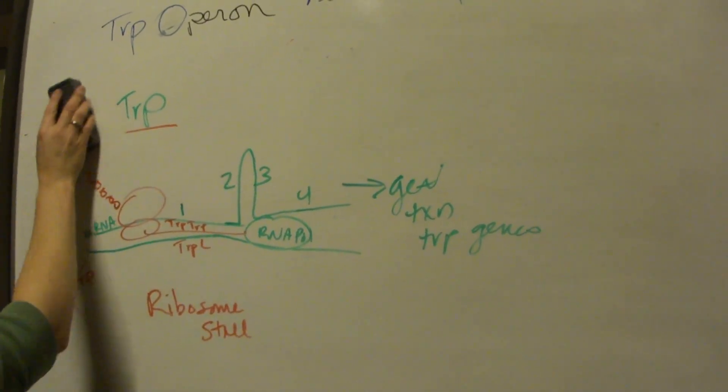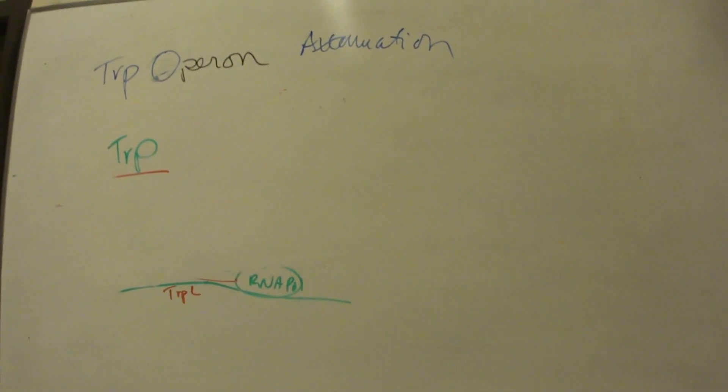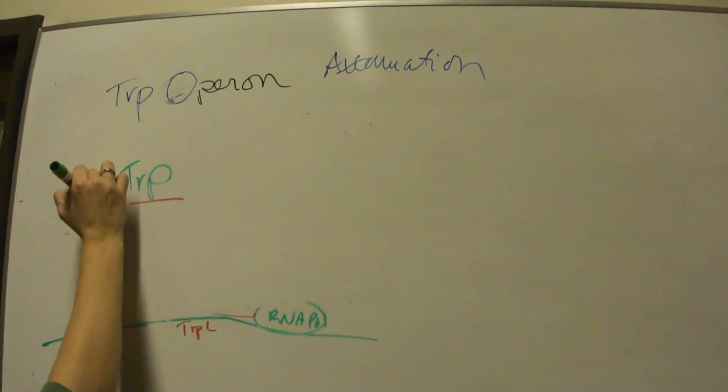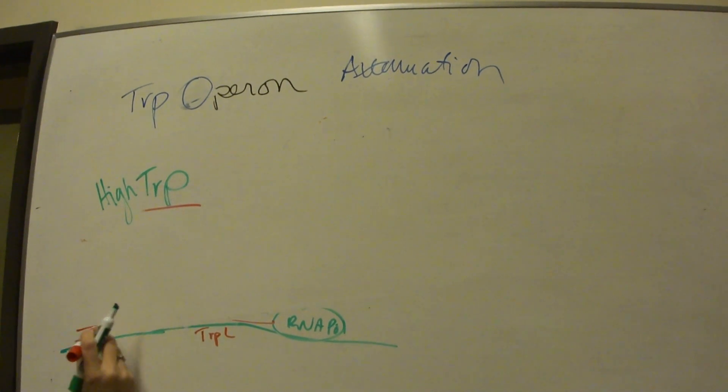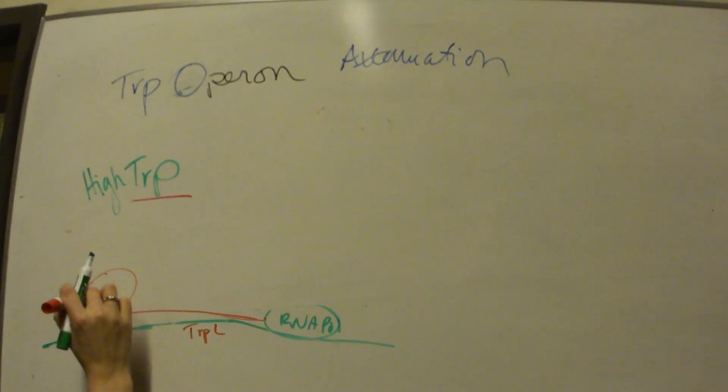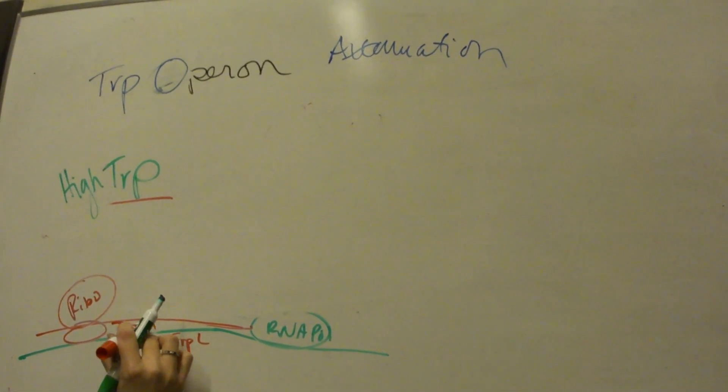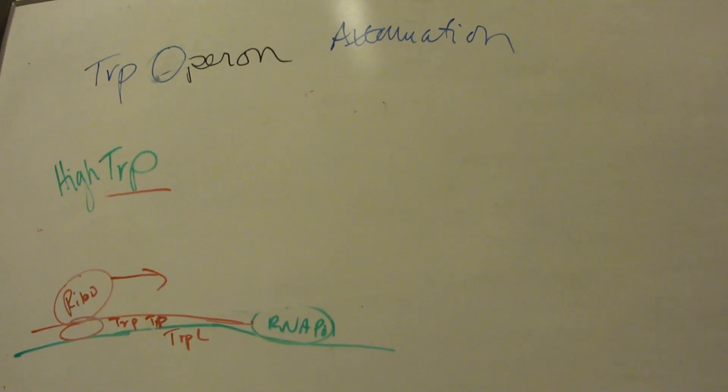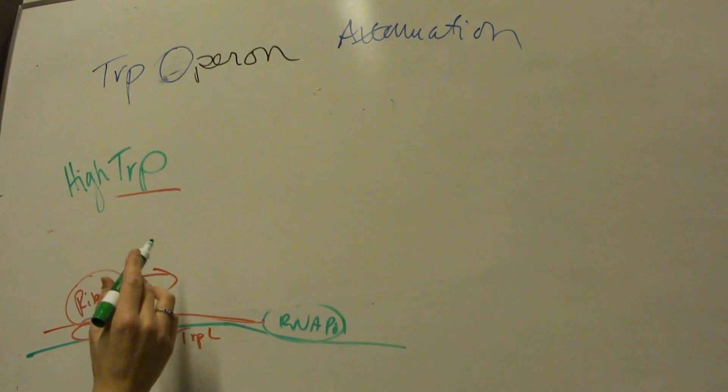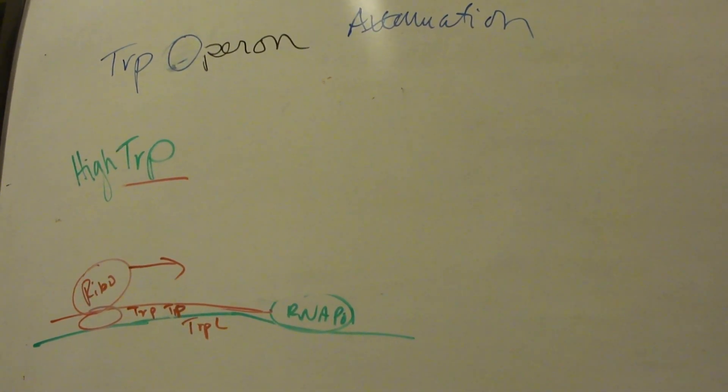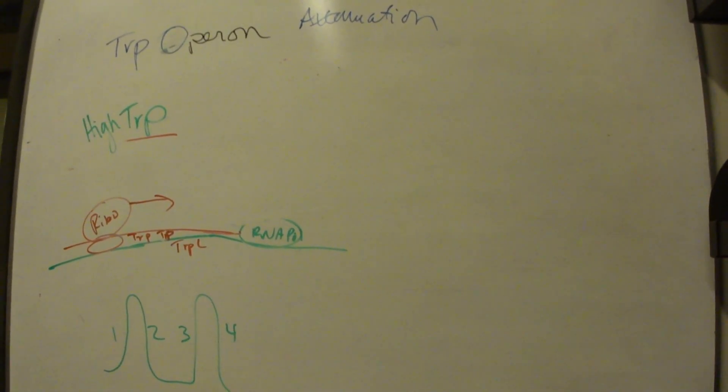In that scenario, you have high or normal levels of tryptophan. You've got your mRNA and your ribosome is trekking along here. It hits those trp codons and it just blazes on through because there's plenty of trp in the cell, there's plenty of tRNA charged with tryptophan present. When it does that, then you end up getting the 1-2-3-4 stem loop.